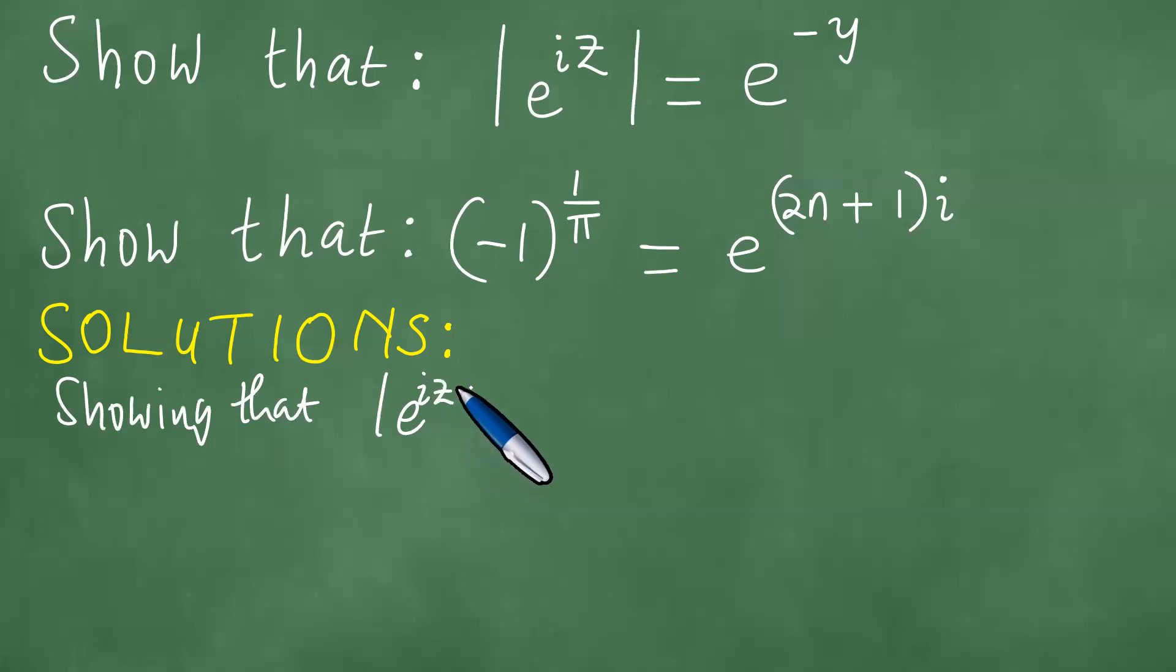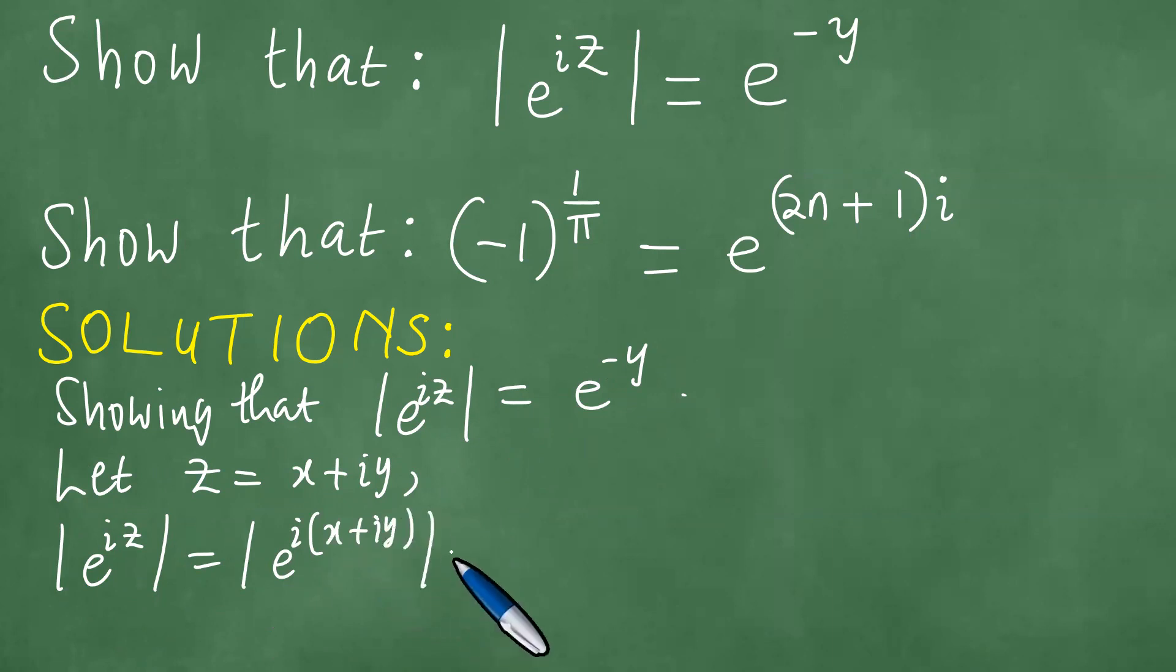e to the iz equals e to the minus y. So how do we show this here? We let z be x plus iy. Then this means that e to the iz is e to the i times x plus iy.